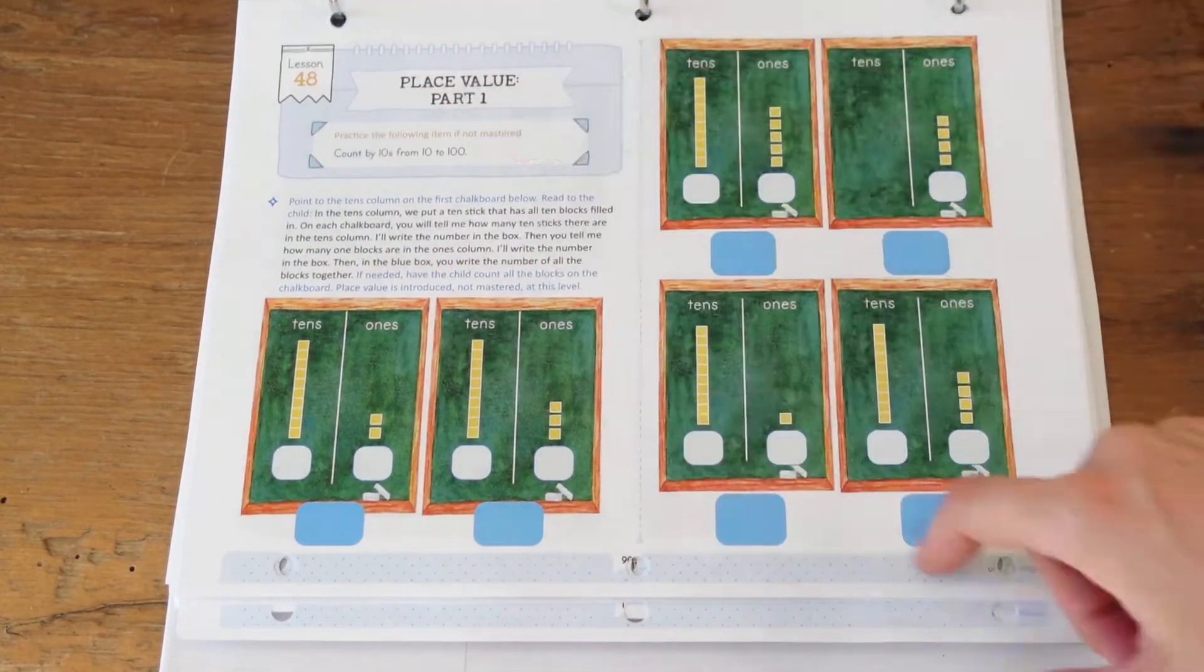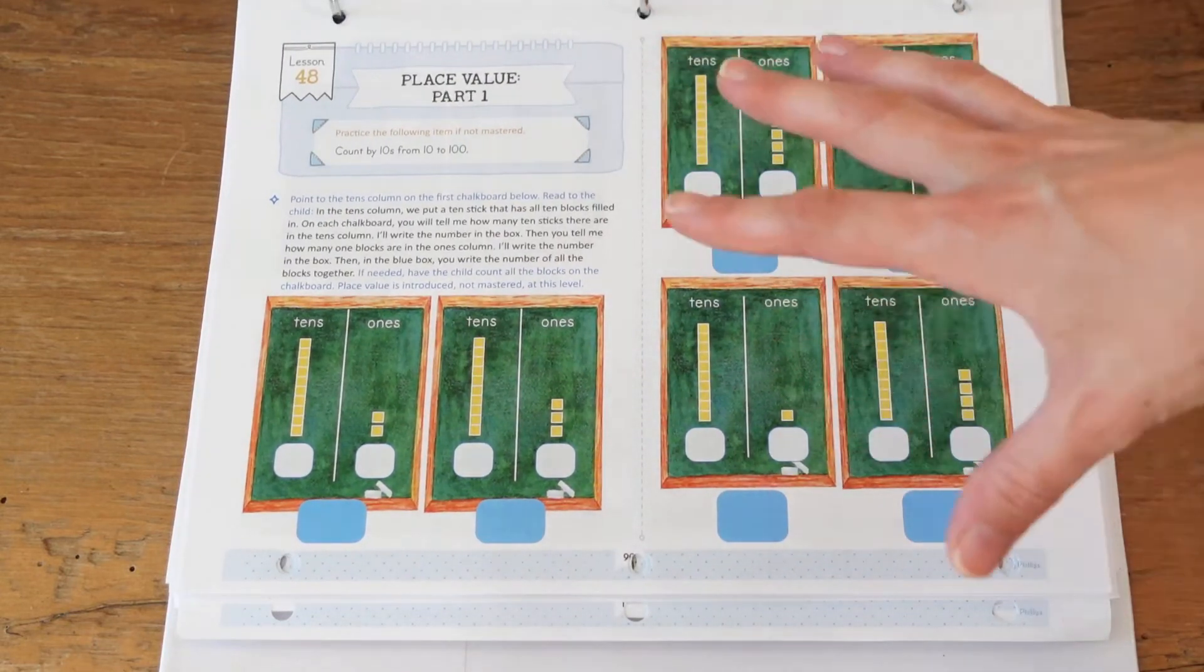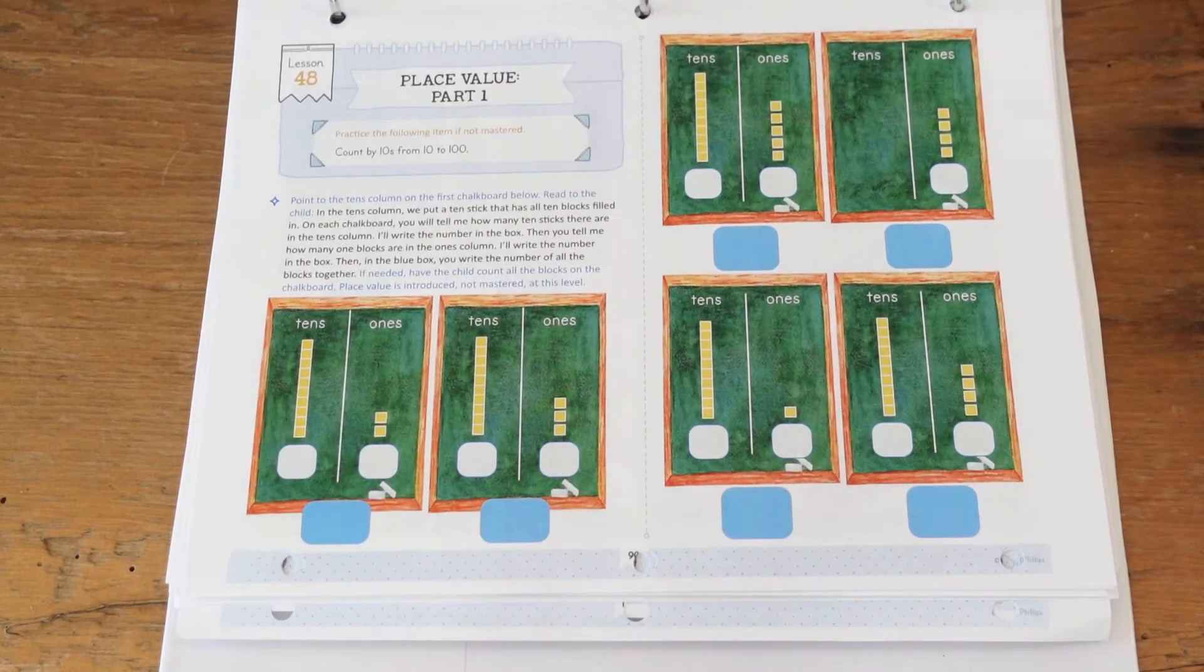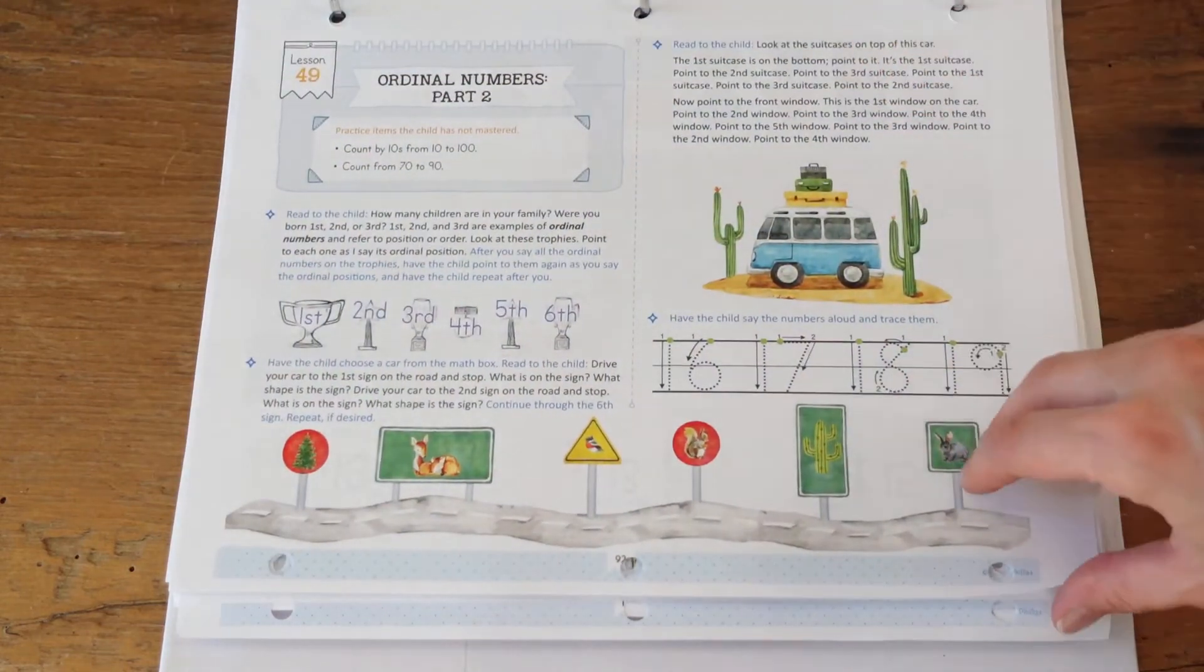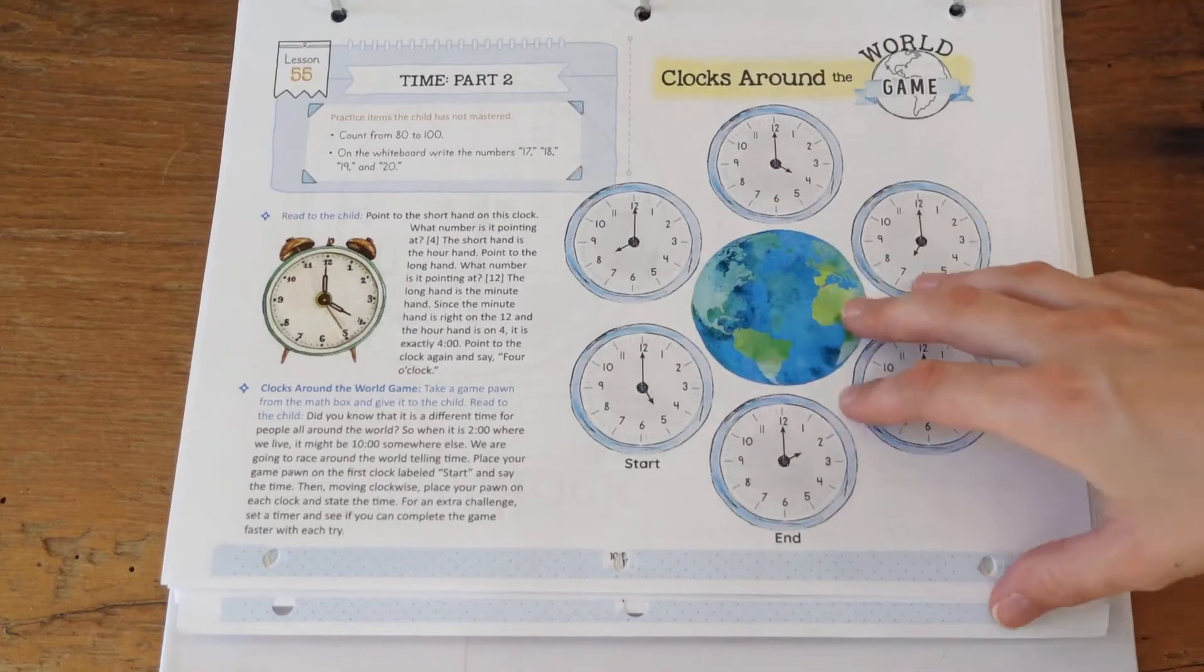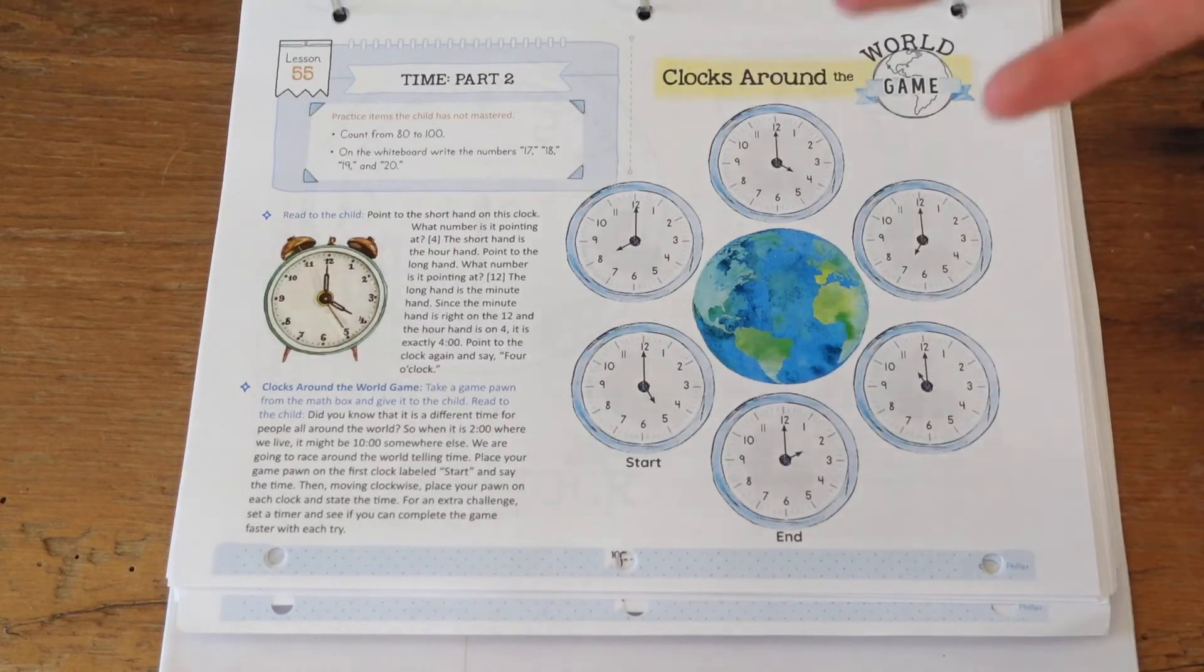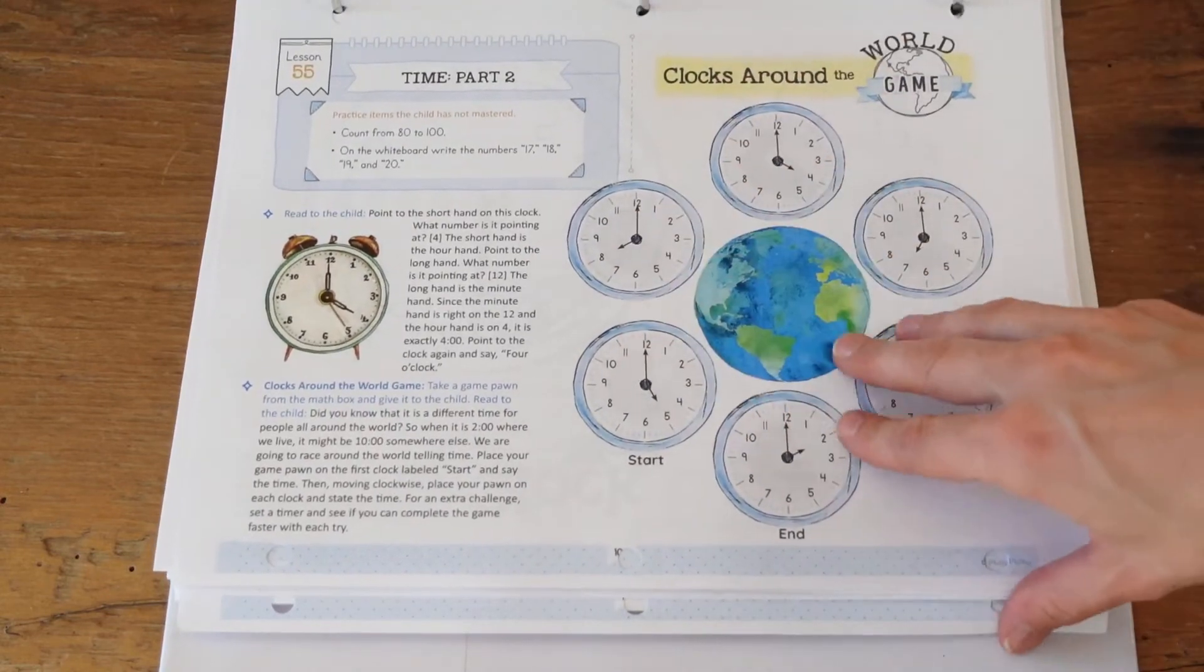I do love how visual their place value is. I like the concept and how they teach it a lot better than other curriculums do as well. CLE's grade one math also does a phenomenal job of teaching place value. Clocks around the world game. I love that they do this because a lot of different math curriculums, even the one that my son is doing, when it comes to time they don't actually teach about the different times around the world, they just teach you how to read the clock. So I love that concept and it's a visual representation of exactly how that works.